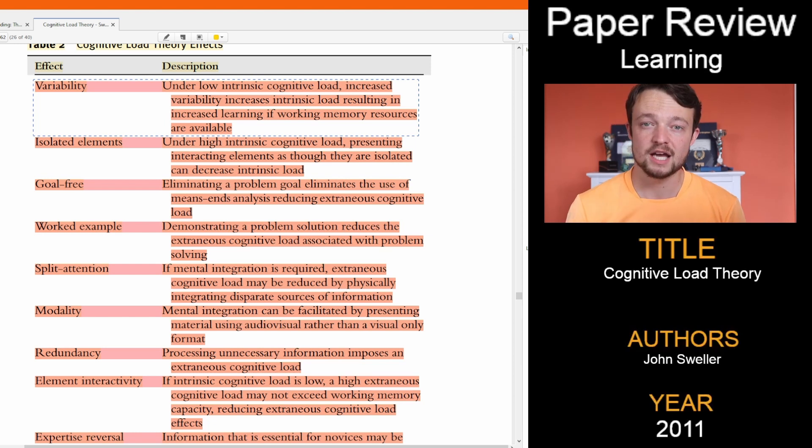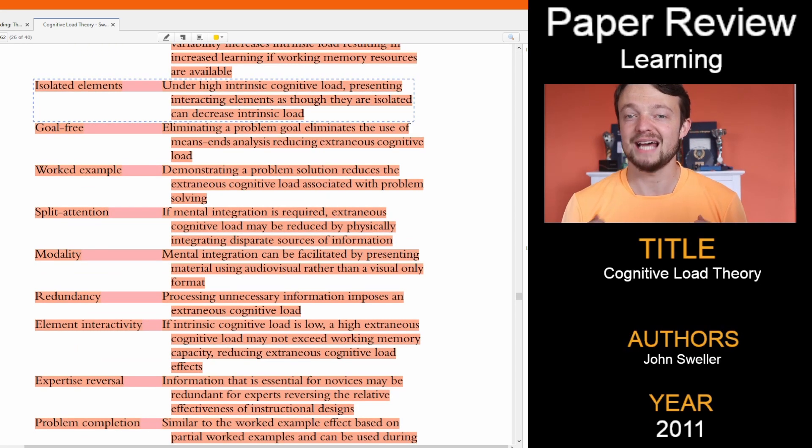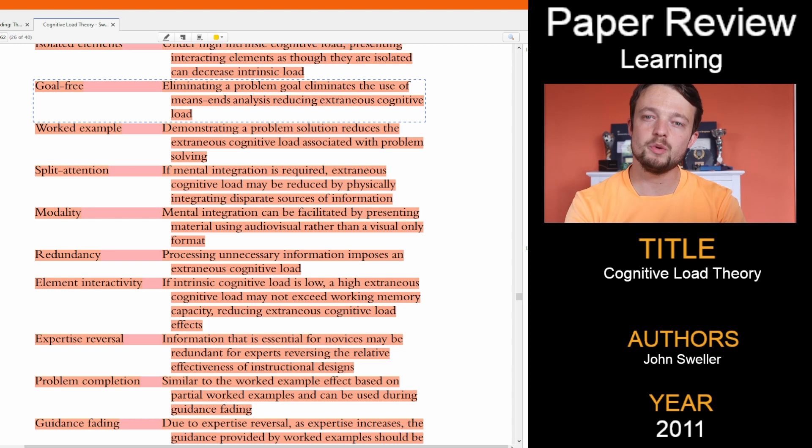The variability effect suggests we want to increase variability of a task if intrinsic load is low, so trying to find something that isn't too easy. The isolated elements effect suggests breaking things down can make things simpler, reducing intrinsic load, instead of doing it all at once, doing it in parts. But the rest of these effects relate to extraneous load, which is from the environment.